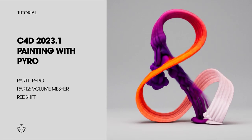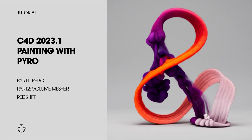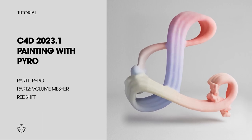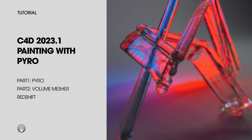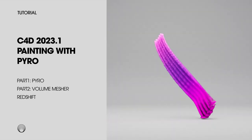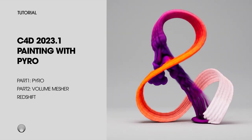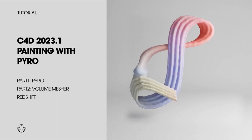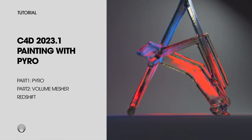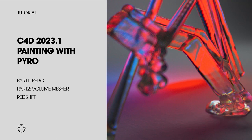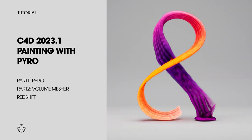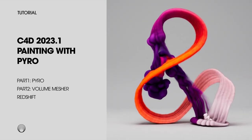Hey everyone! Welcome to another tutorial of Friends of Motion. Today I am so excited to show you the new Pyro simulation from Cinema 4D 2023.1 and how you can use it to create these beautiful liquidy colorful inks, and also use it with the volume mesher to create something that feels more like paint.